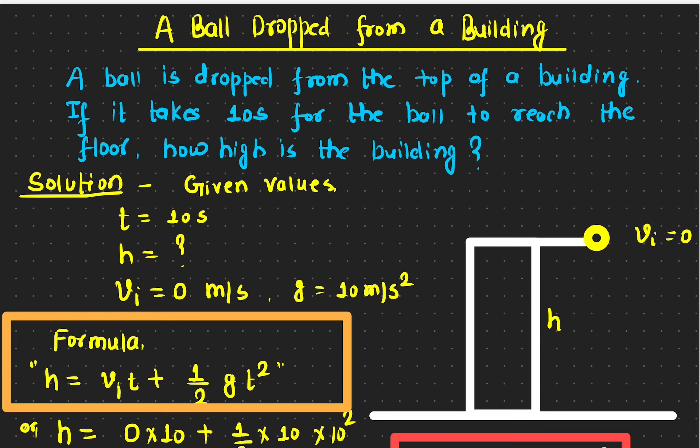In this video we're going to use basic kinematic equations to determine the height of a building. All you have to do is go to the top of a building, drop a ball, and measure the time it takes to reach the floor. If you measure the time correctly, you should be able to measure the height of the building very accurately. Here we are ignoring air resistance.